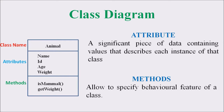For example, let us consider a class called Animal. Animal is the class name, and it is represented in the topmost region. The second compartment comprises the different attributes — these attributes are a significant piece of data containing the values that describe each instance of that particular class. For an animal, every animal has a particular name, a particular age, weight, and a particular number or ID.